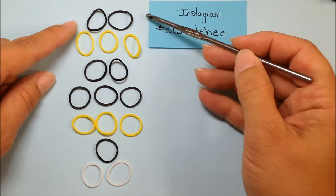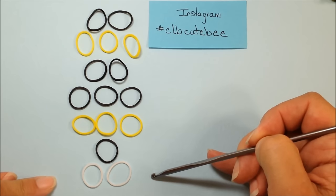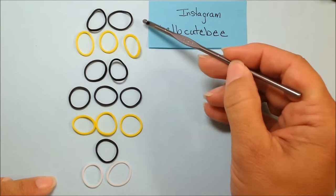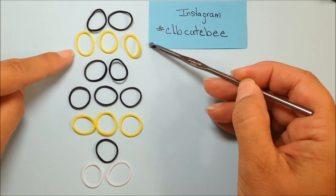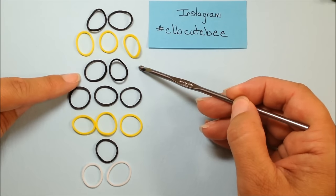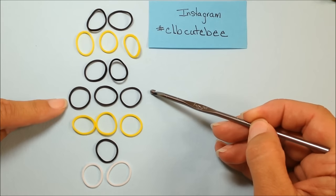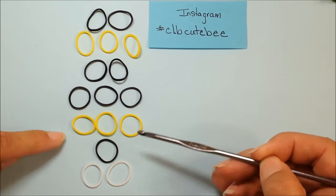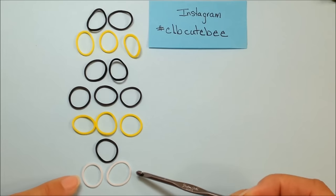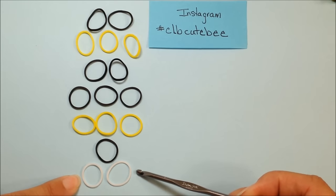If you'd like to follow along easier with my lesson lay your bands out as here. Two black, three yellow, two black, three black, three yellow, one black, and two white I'm using for my wings today.